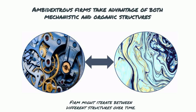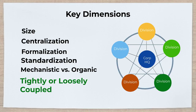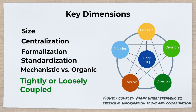Ambidextrous firms take advantage of both mechanistic and organic structures. For example, a firm might iterate between different structures over time, or it might have a mechanistic structure in one part of the firm and an organic structure in other parts.